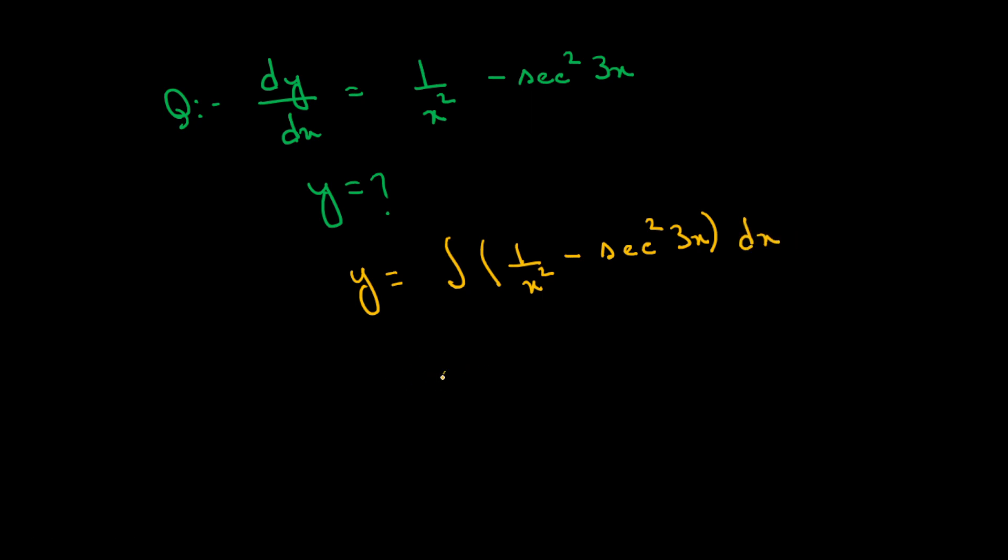x square raised to the power gives x to the power minus 2 plus 1 divided by minus 2 plus 1.